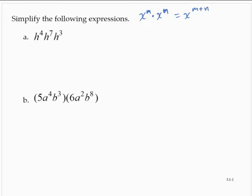So here we have h to the fourth times h to the seventh times h to the third. I can think of that as h to the fourth plus seven plus three, which is h to the 14th.